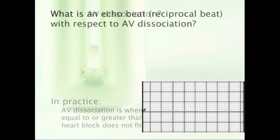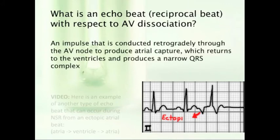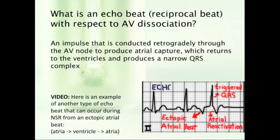What does an echo beat refer to when talking about AV dissociation? In AV dissociation, an echo beat occurs when an impulse is conducted retrogradely through the AV node to produce an atrial capture that, on return to the ventricles, produces a narrow QRS complex. This is different from the capture beat, which begins in the atria. An echo beat conducts retrograde and then returns — or echoes — back. Also note that echo beats are referred to as reciprocal beats.